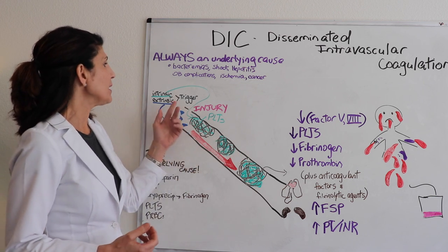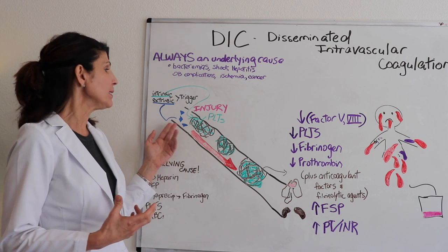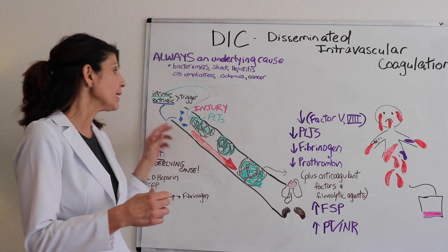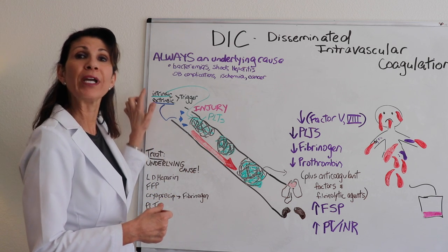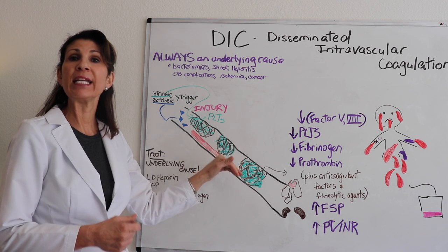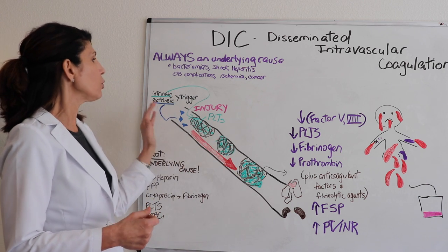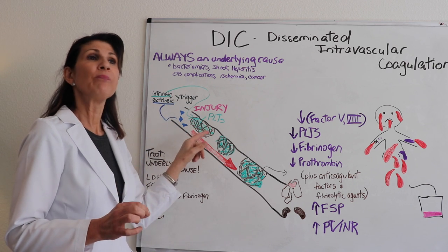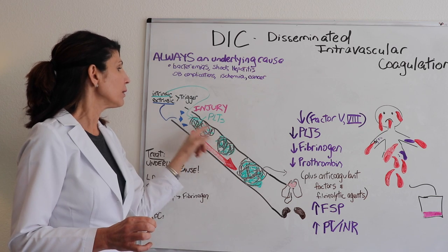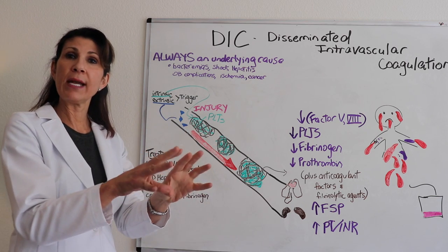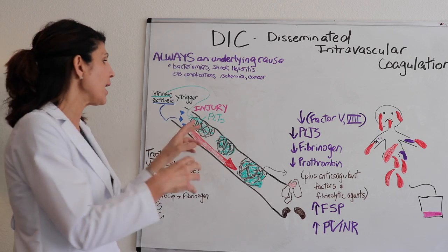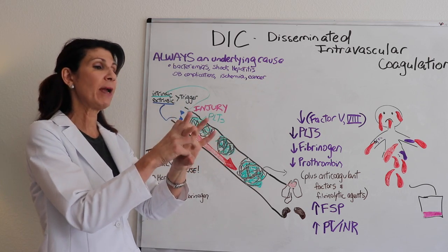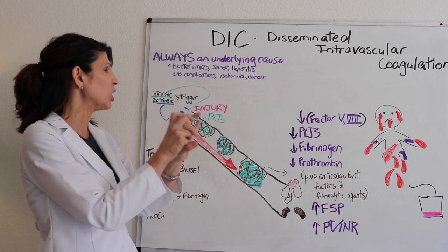What happens in DIC is either an intrinsic mechanism is triggered, which normally is the first step in the clotting cascade. It's either going to be extrinsic or intrinsic from damage to the endothelial lining itself. What I've illustrated here is an intrinsic injury that occurs to the endothelial lining, and then platelets are drawn to that area, aggregate, and eventually the whole fibrin clot forms around it. That fibrin mesh encases it so it becomes a stable clot.